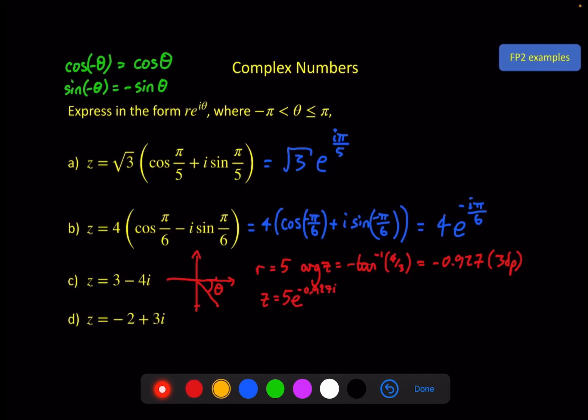Do the same thing with part d, except now we're on minus 2 and 3, so we're up here somewhere and the argument here will work out as usual by first finding alpha here. Modulus first, square root of 2 squared plus 3 squared is square root of 13.